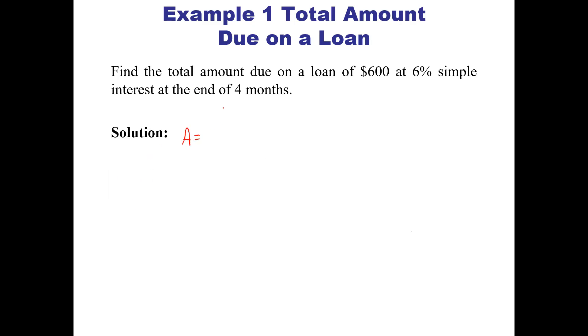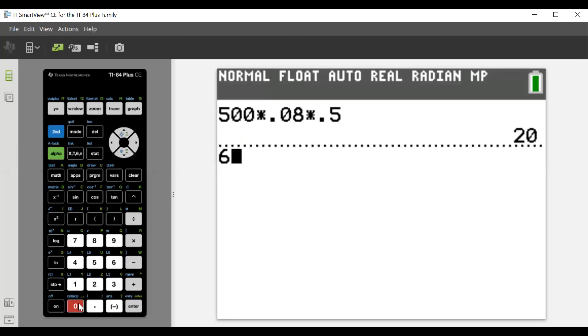Our principal is $600. We use the formula: A equals P times (1 + rt). The rate is 0.06, and the time is four months, which is 4/12 or 1/3. So we have 600 times (1 + 0.06 times 1/3). Using the calculator, this gives us $612.